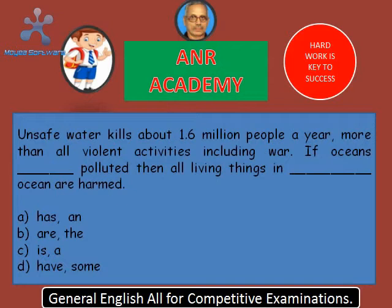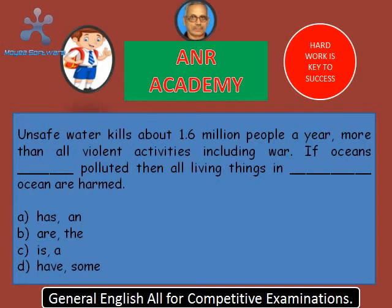Here are your four options: A) has an, B) are the, C) is a, D) have some. Your correct answer is option B, 'are the'. Unsafe water kills about 1.6 million people a year, more than all violent activities including war. If oceans are polluted, then all living things in the ocean are harmed.